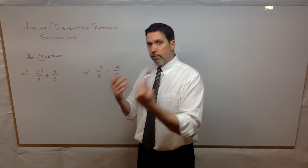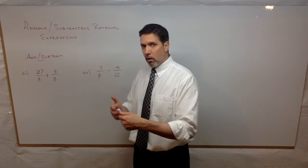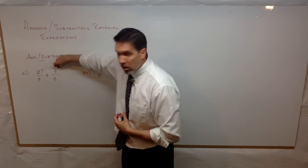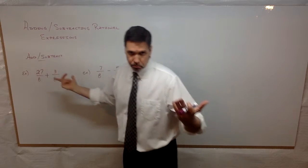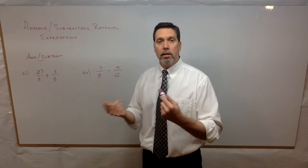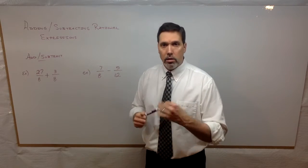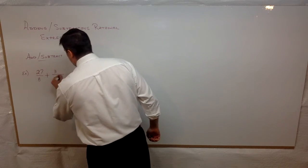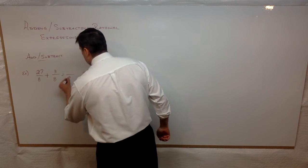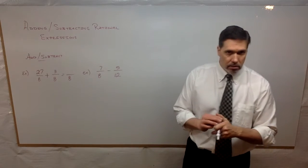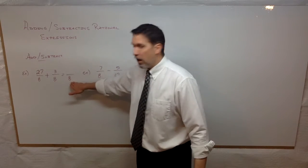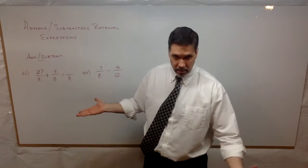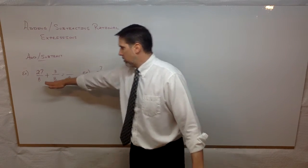So your teacher said: if the denominators are the same — if you already have common denominators — all you have to do is simply add, or if there's a subtraction, subtract the numerators accordingly. You don't add or subtract the denominators; you keep that common denominator. So the final answer, at least on the surface, will have that common denominator of eight. We don't add eight and eight.